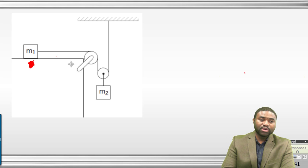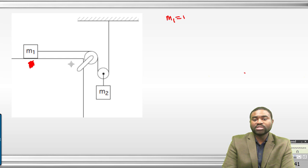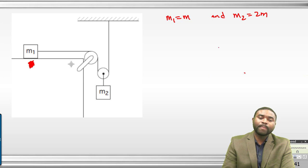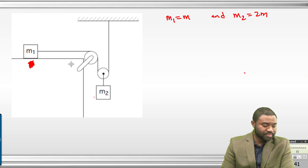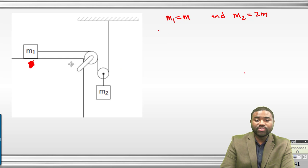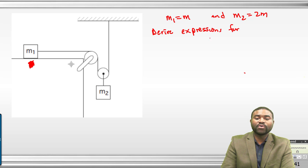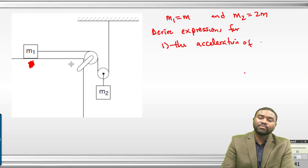We have two blocks, M1 and M2. M1 is equal to M, and M2 is equal to 2M. M1 moves on a surface on a horizontal table. The table is smooth, and it is connected to M2 via a string. The question is: when the system is released from rest, we need to derive an expression for the acceleration of block 1.